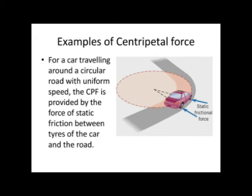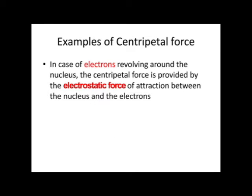In the next example, suppose a car is moving on a circular path with uniform speed. Again centripetal force is required, which is provided in this case by the friction force acting between the tires of the car and the road. Since this friction force acts towards the center, it is responsible for the centripetal force required for the motion of the car on the circular track. In another example, in the case of electrons revolving around the nucleus, centripetal force is provided by the electrostatic force of attraction acting between the nucleus and electrons.